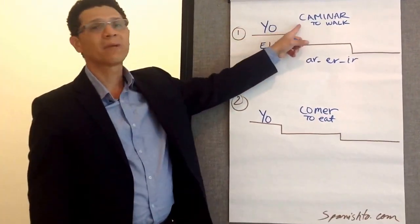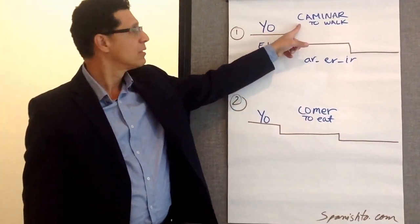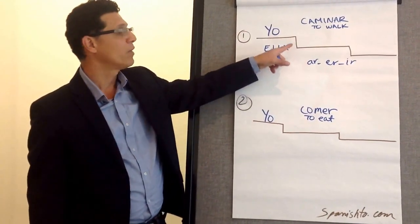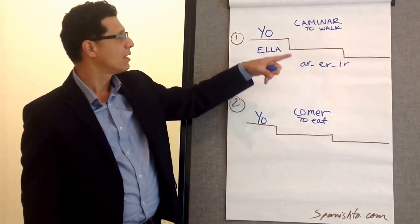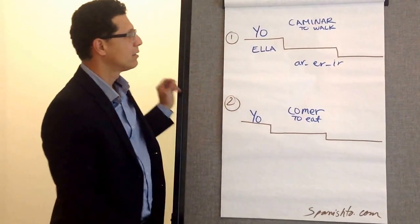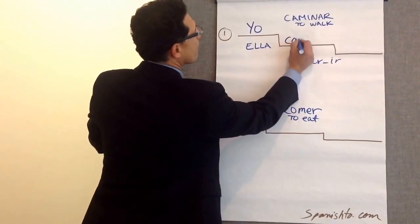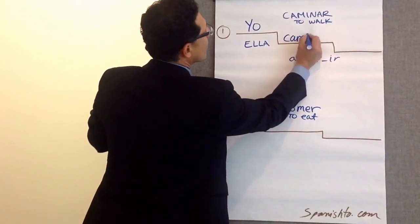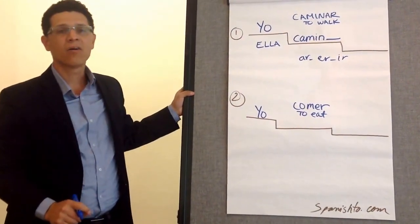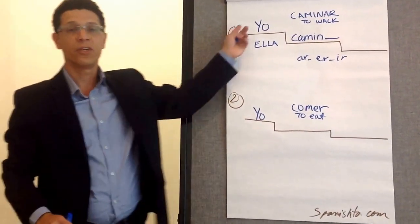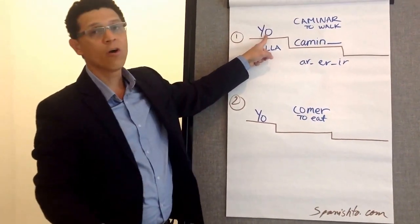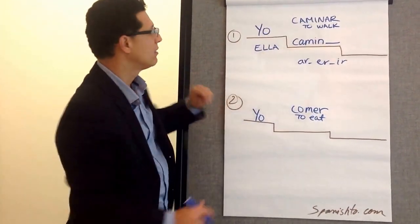So what happens to the verb caminar? Caminar is an A-R verb. When we insert it in the sentence, it would simply keep the base. The ending is now going to be replaced — in the case of yo — with the O. Remember, the O from yo always is going to be at the end.